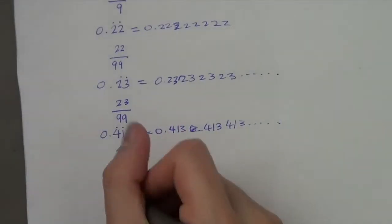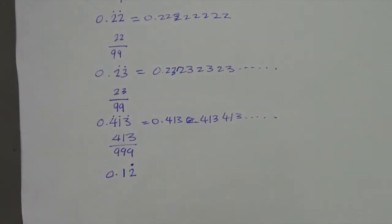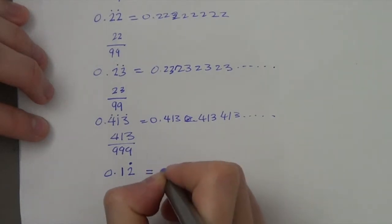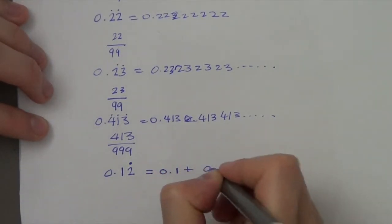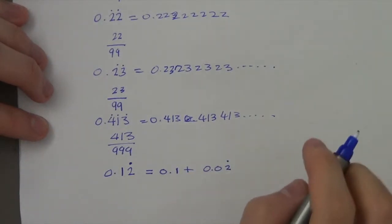Now, what happens if I have 0.12 recurring? So be careful that this is 0.12 recurring, not just 0.12. If it was 0.12 by itself, then that would be 12 over 100. But this actually can be rewritten as 0.1 plus 0.02 recurring like that.